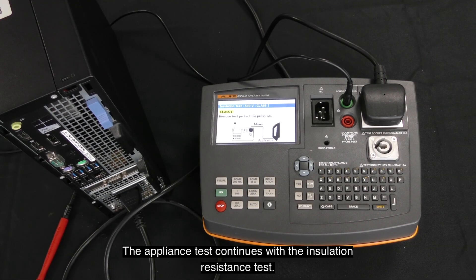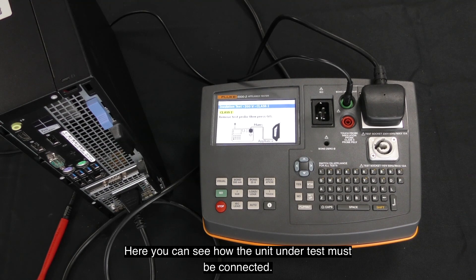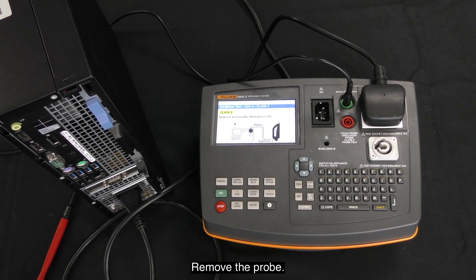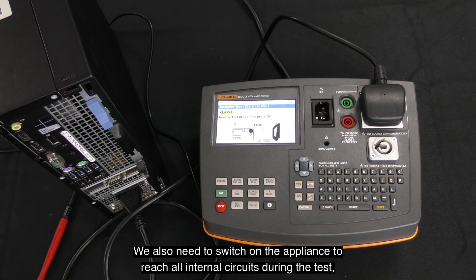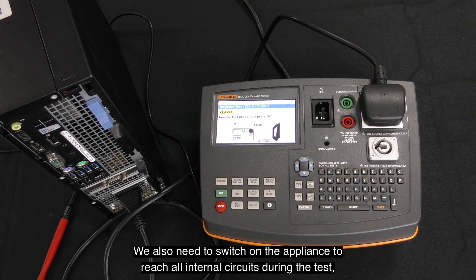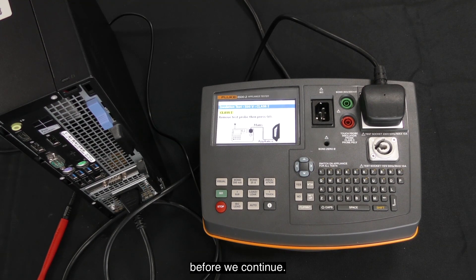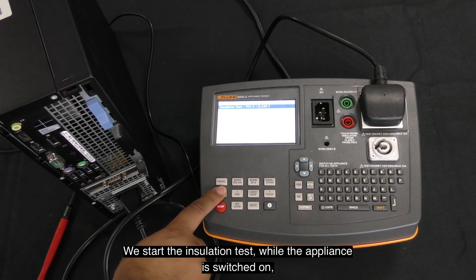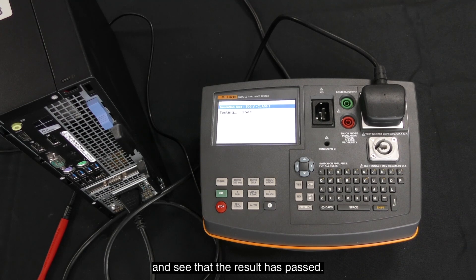The appliance test continues with the insulation resistance test. Here you can see how the unit under test must be connected. Remove the probe. We also need to switch on the appliance to reach all the internal circuits during the test before we continue. We start the insulation test while the appliance is switched on and see that the result has passed.